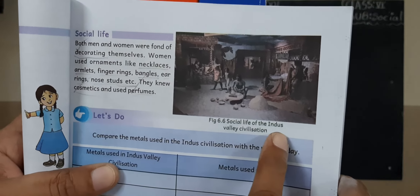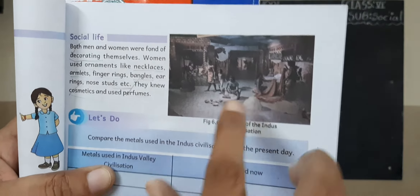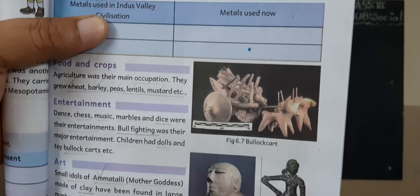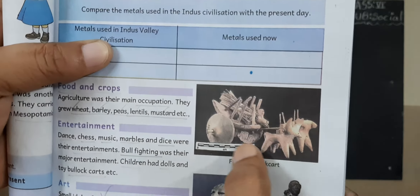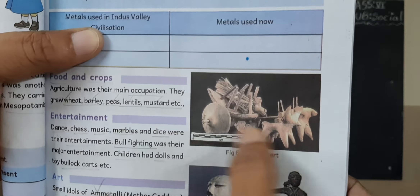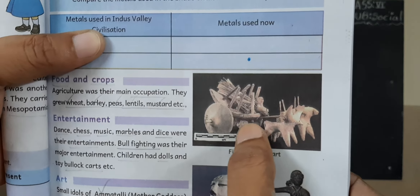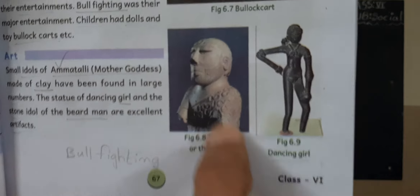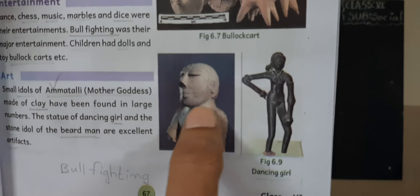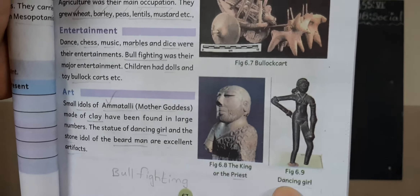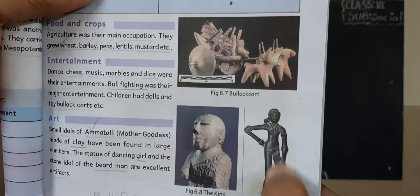Now look at this — the social life of the Indus Valley Civilization. Look at the toys: a bullock cart. Children used to play with these toys. The king-priest — look at the figurine here. Next, here is the dancing girl.